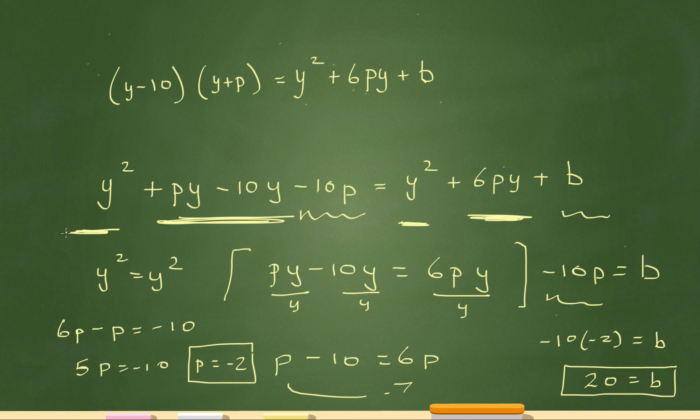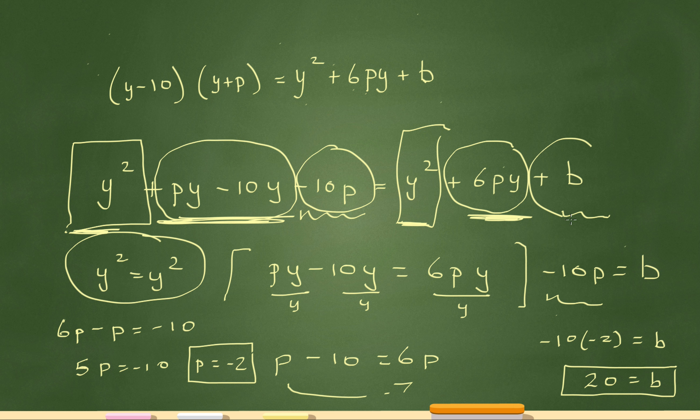I think there's one thing you want to take away, is if you foil out terms and there's something that's already foiled out, the first will equal the first, which is what I had here. The outer inner over here will equal the outer inner here. And the last will equal the last here, which is what I have here and here.